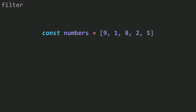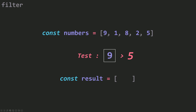You don't want to change your numbers array, so you don't want to remove those that are less than 5. You need to create another array — let's call it result — and go through your numbers array, testing whether each number is greater than 5. For 9, that evaluates to true, so you push it into the result array. 1 doesn't satisfy the condition, so you skip it. 8 satisfies the condition, so you push it. 2 and 5 don't satisfy the condition. That's how you filter out an array.